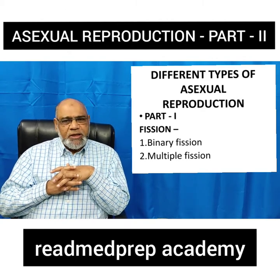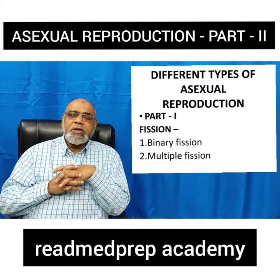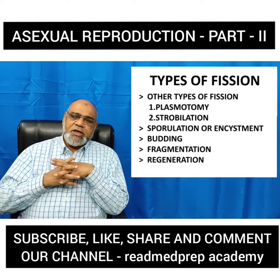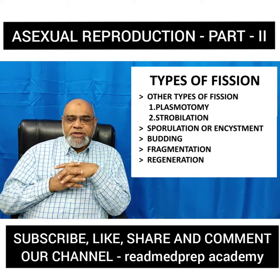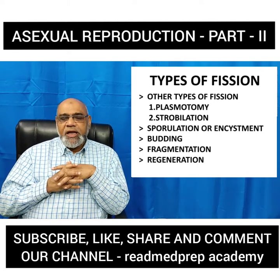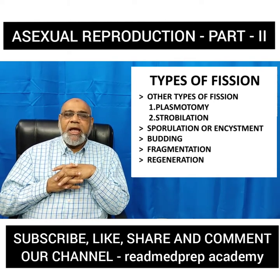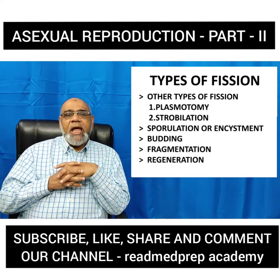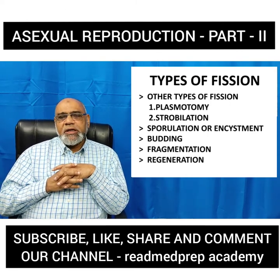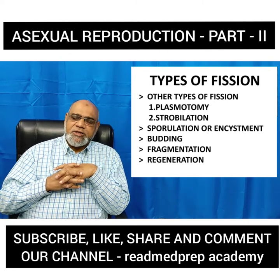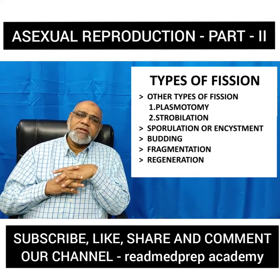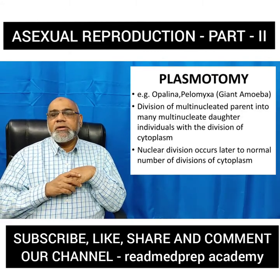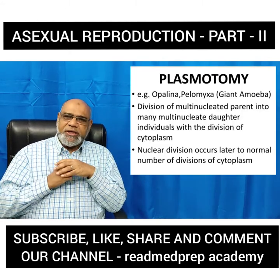In Part 1, we have already seen about binary fission and multiple fission. In this lecture, we are going to see about the other types of fission like plasmatomy and strobilation. The other types of Asexual Reproduction are Sporulation or Encystment, Budding, Fragmentation, and Regeneration. We will go through each one in detail.